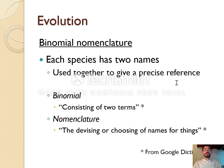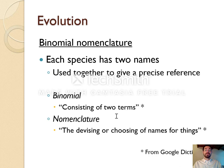These two names are used together to be very precise about which organism we're talking about. This system is called binomial nomenclature, where binomial means two names — bi-nome — and nomenclature means name-making: nomen is name, and clature is choosing or making.